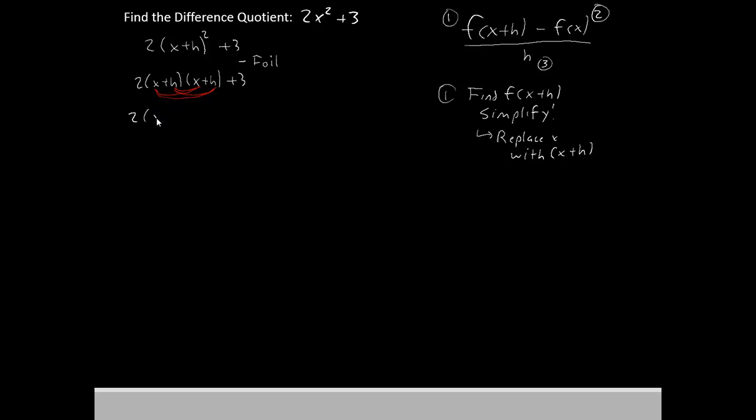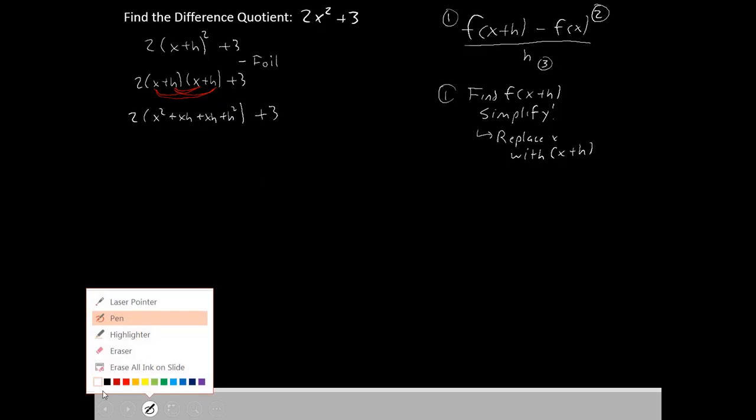So x times x is x squared, x times h is xh, h times x is also xh, and then h times h is h squared. Close parentheses, and then put the 3 on the outside.